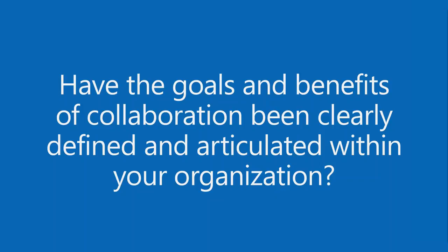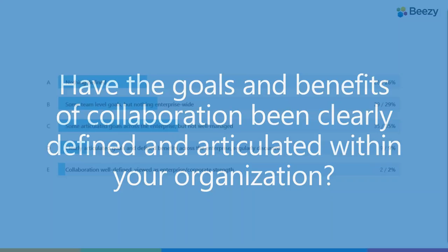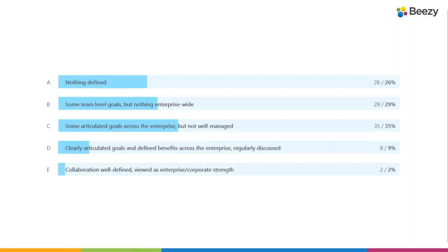Have the goals and benefits of collaboration been clearly defined and articulated? We've determined organizations are not doing a good job of defining it up front — so are they then going to articulate it within the organization? Not really. You might have some articulated goals at the enterprise level, but how do those goals translate into day-to-day activities? That's where you see shadow IT — a marketing manager saw an ad for a service and decided to use Slack at the team level.